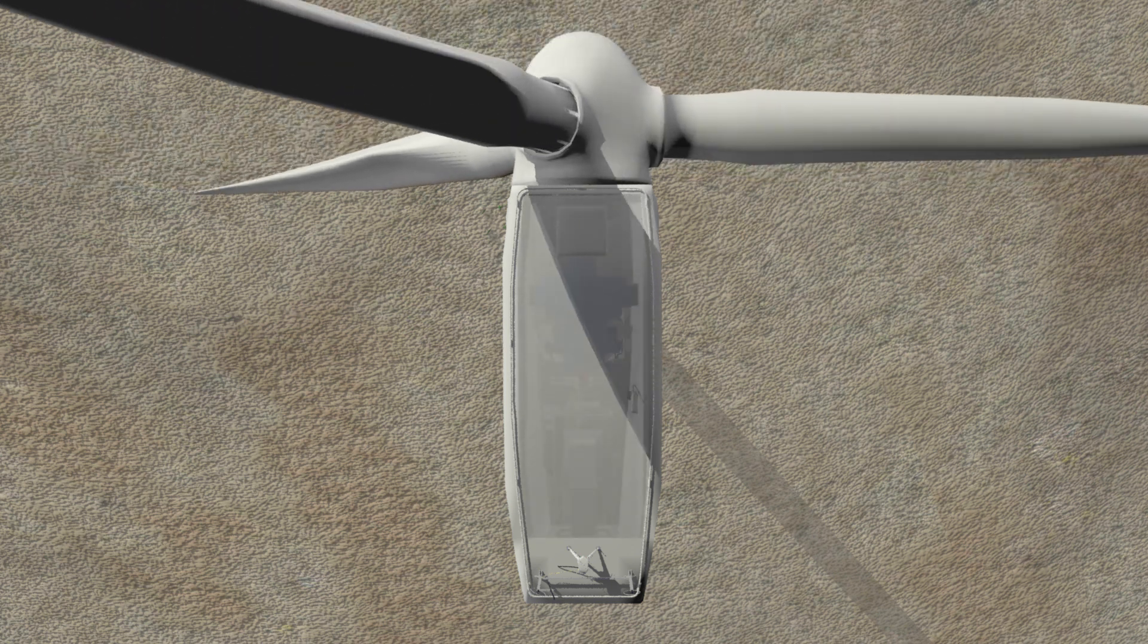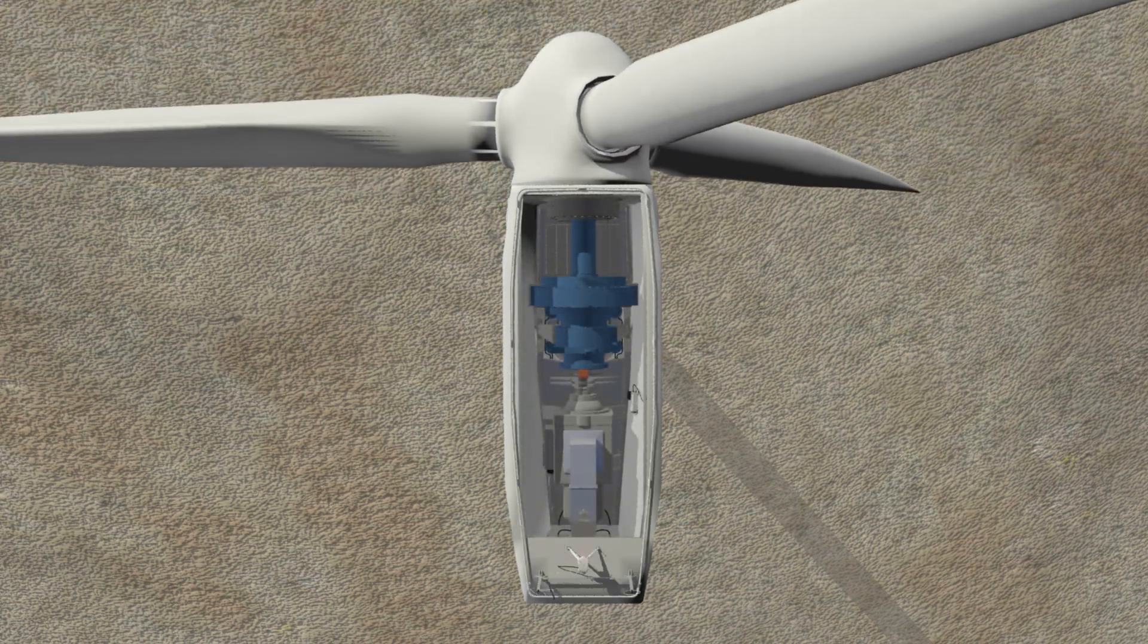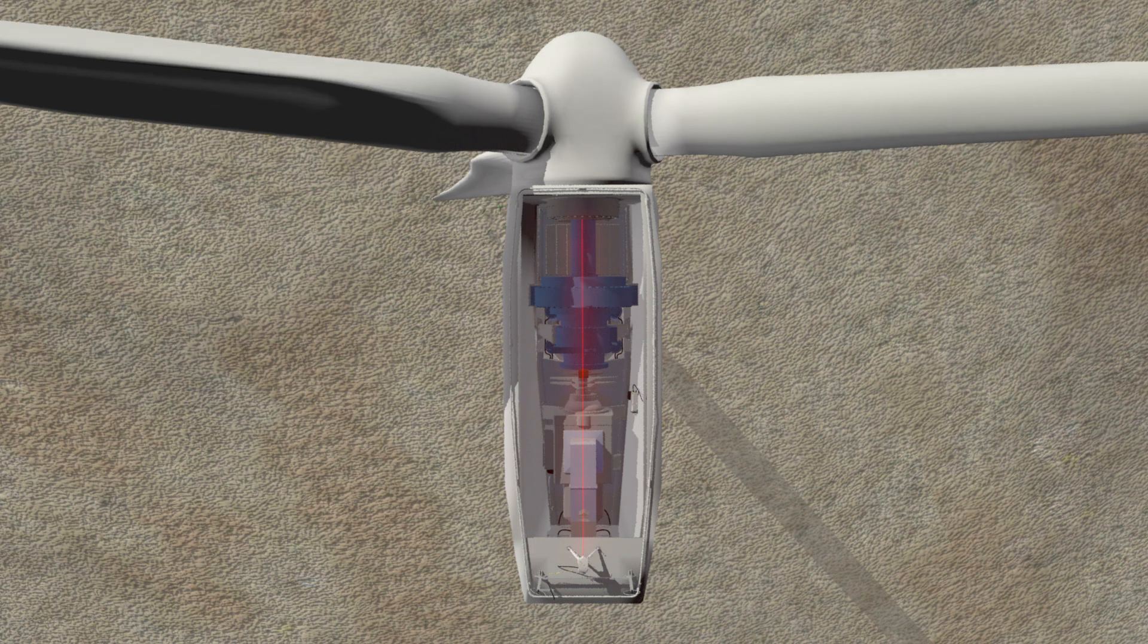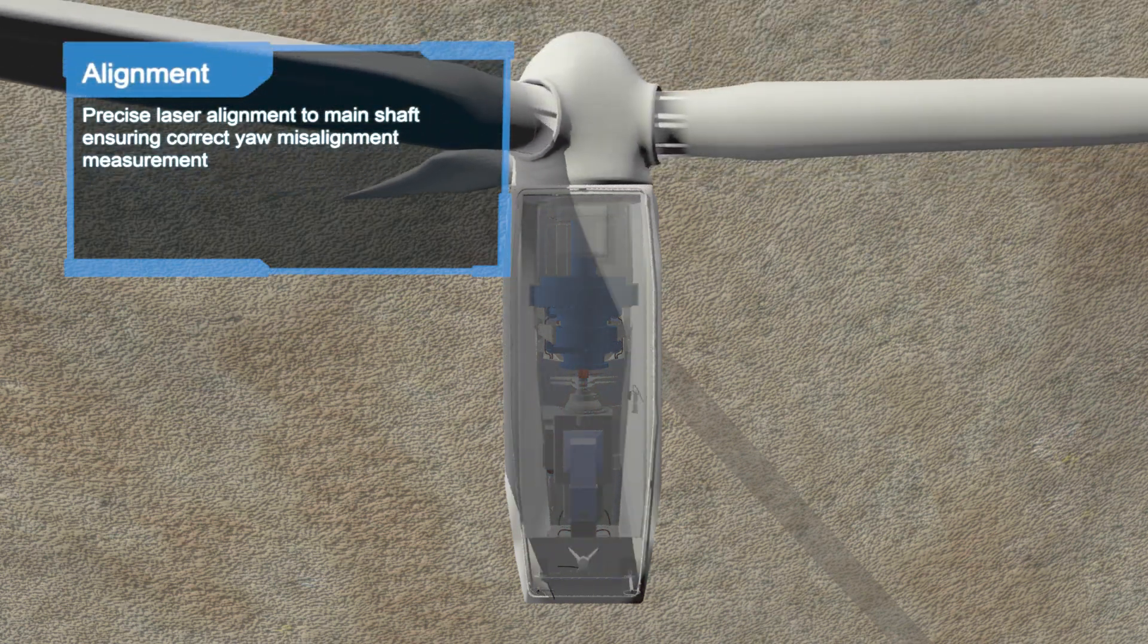The lidar is very precisely aligned according to the main shaft of the turbine to ensure that the lidar system measures correctly in relation to the wind turbine.